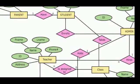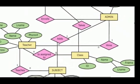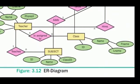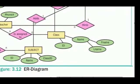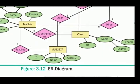For the Teacher entity, the attributes are: phone number, name, ID, and address — including first name and last name. For the Class entity: class ID and name — first name and last name. For the Subject entity: ID, name, and class ID.